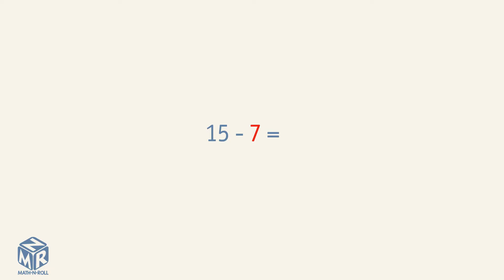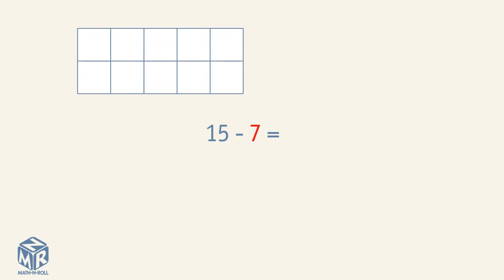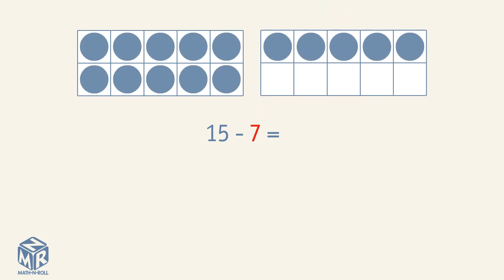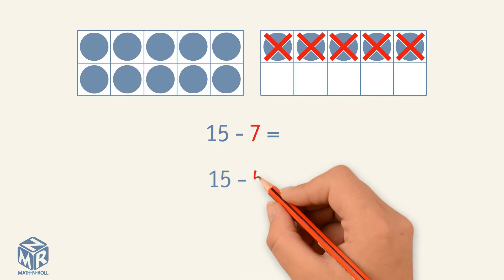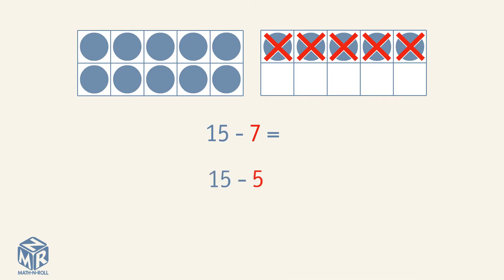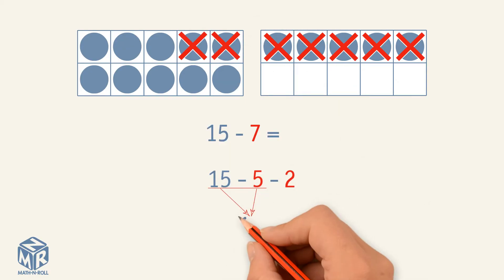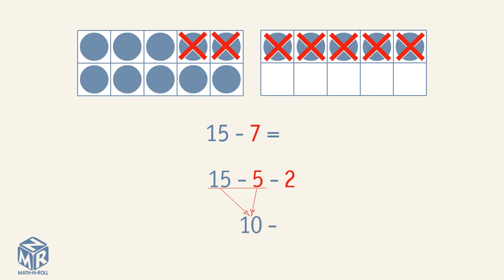Let's do another example. 15 minus 7. Place 15 counters into two 10 frames. How many do we subtract to get 10? We subtract 5 counters. How many more to subtract 7? We subtract 2 more. 15 minus 5 equals 10. 10 minus 2 equals 8. So 15 minus 7 equals 8.